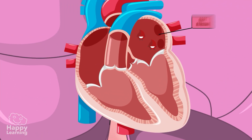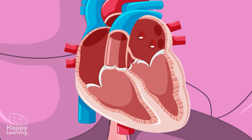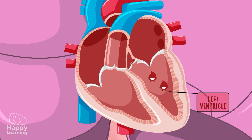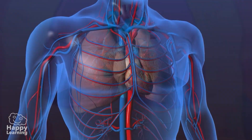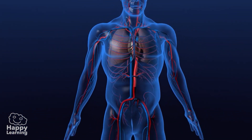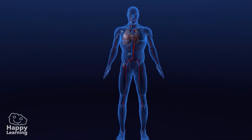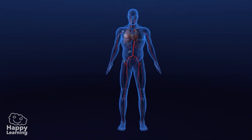It's in the lungs where the blood is oxygenated — filled with oxygen and nutrients. Once oxygenated, it goes back to the heart, reaching the left atrium, then passes through the third valve to the last cavity, the left ventricle. Finally, the heart sends this oxygenated blood through the fourth and last valve towards the rest of the body, and the cycle starts again.